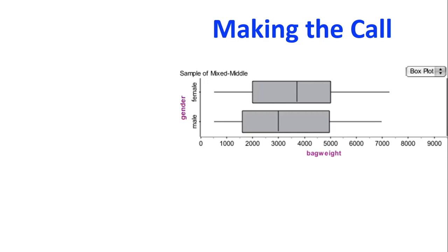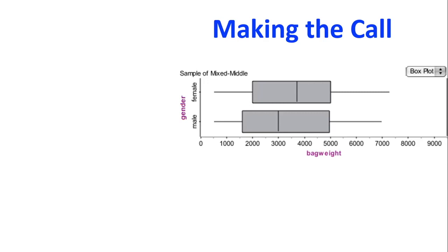So let's have a look at this example here. So we've got our bag weights of our males and females. First thing we're going to do is find the median of one of the groups and see, does it lie inside the box of the other group? So here is the median of the female group that I've put on. And now here is the box of the male. Does that median lie inside or outside the box? And I would say that it lies inside because it cuts through the box. So that lies inside.